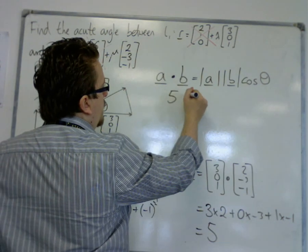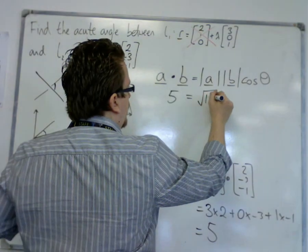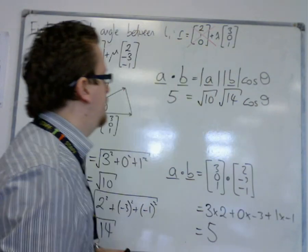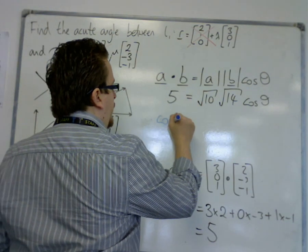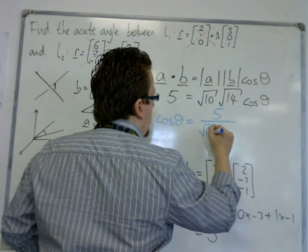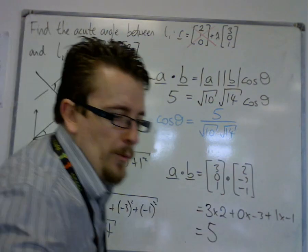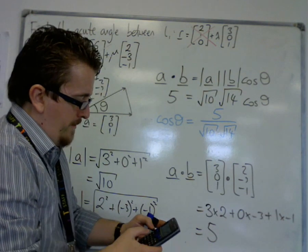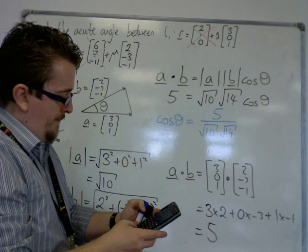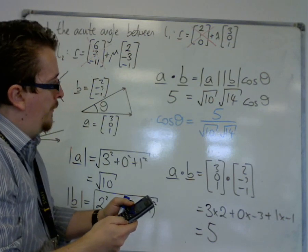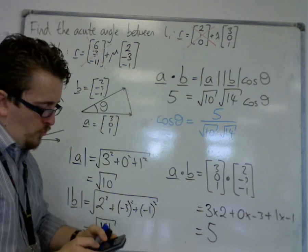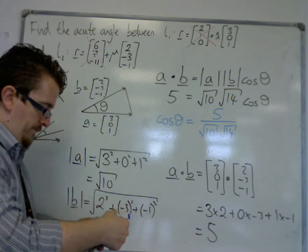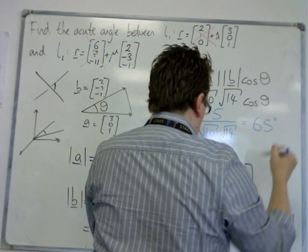So A·B = 5, |A| = √10, |B| = √14, and we have our cosθ. Rearranging, cosθ = 5 / (√10 · √14). Plugging this into the calculator — 5 over √10 times √14 — and taking the inverse cosine of both sides, in degrees, gives us 65 degrees to the nearest degree.